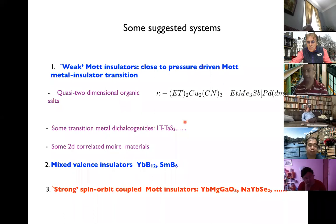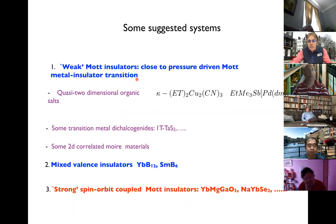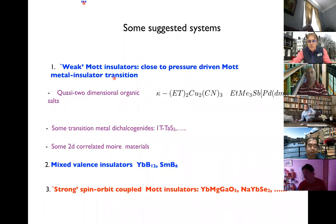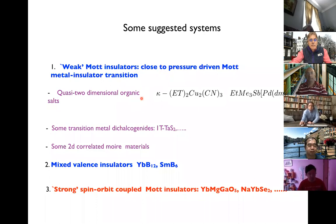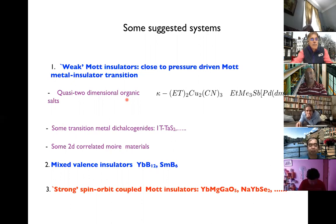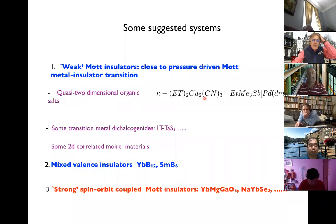Some of the suggested systems include: perhaps most commonly, weak Mott insulators that are very close to the metal-insulator transition, just barely on the insulating side. You may drive a Mott transition through pressure. The best examples — the ones that have gotten the most attention — are quasi two-dimensional organic salts on nearly triangular lattices. Two famous examples are materials that form layered structures where the action takes place on a triangular lattice within each layer.